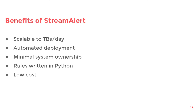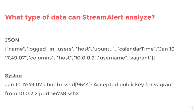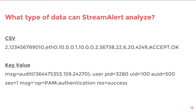Some of the benefits of StreamAlert are that it can scale to handle terabytes of data per day. It comes with a fully automated push-button deployment and abstracts a lot of the operational overhead away. We also wrote it in Python, a common language that many people are familiar with, and it has a low cost in terms of dollars and cents. In terms of data formats, we can support JSON, syslog, CSV, and key-value pair data.